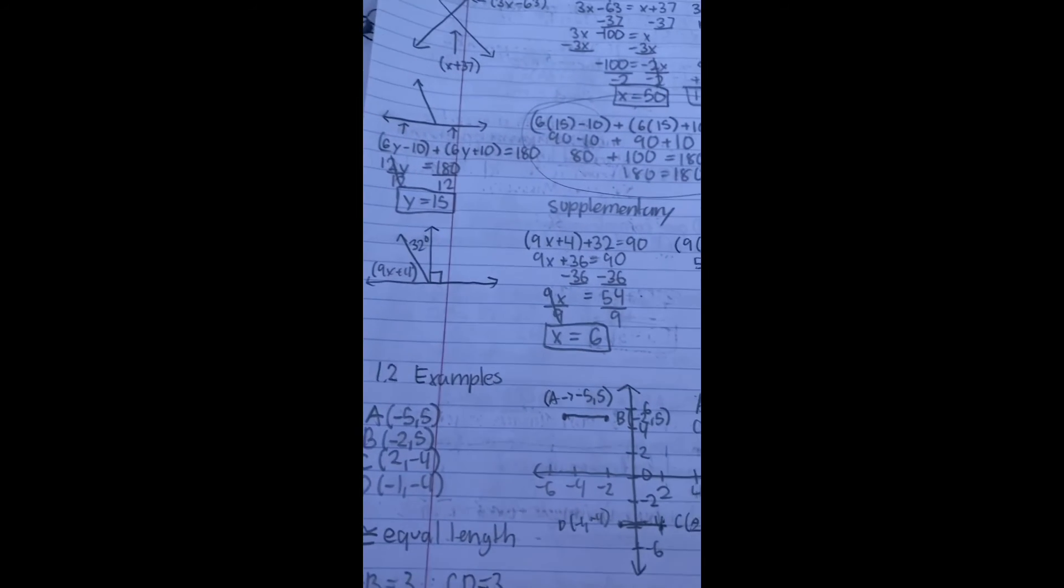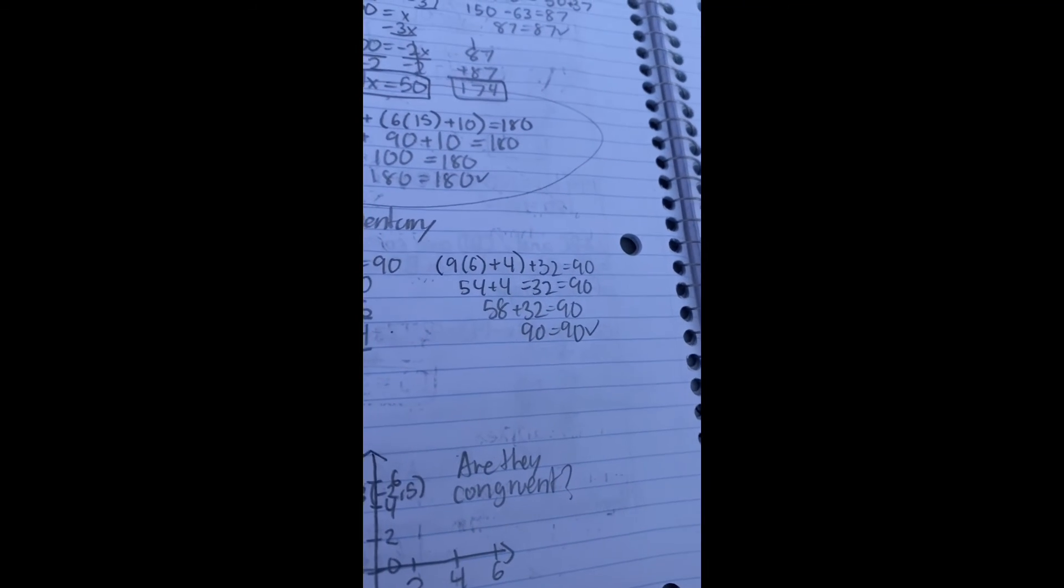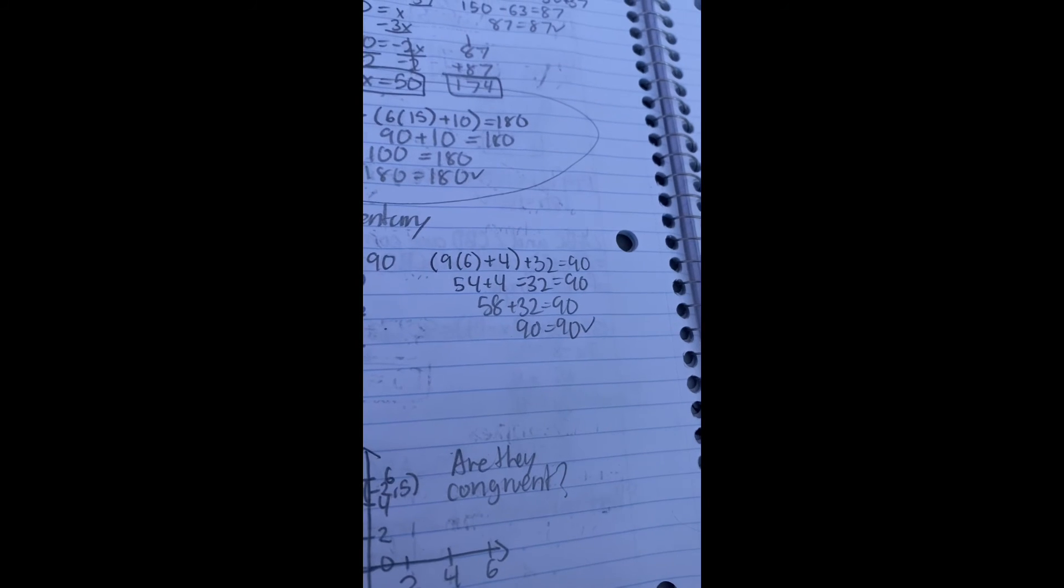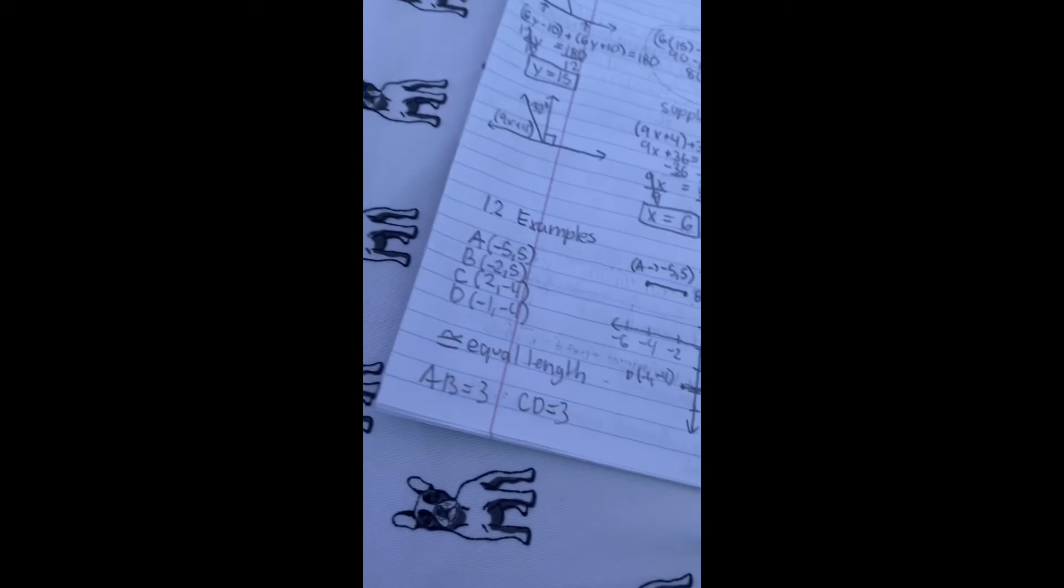Supplementary. We are looking for supplementary angles. So 9x plus 4 plus 32 makes 36 plus 9x. Subtract 36 from both sides makes it 54 divided by 9 makes it 6. To check your work, plug it back in. 9 multiplied by 6 is 54 plus 4 is 58 plus 32 is 90.